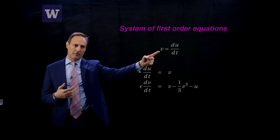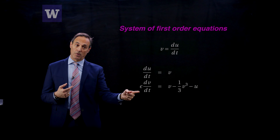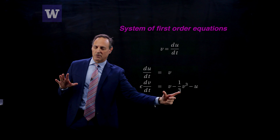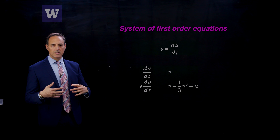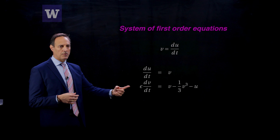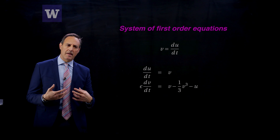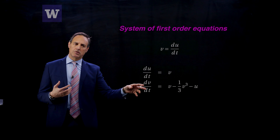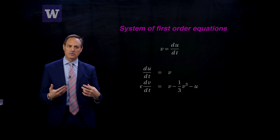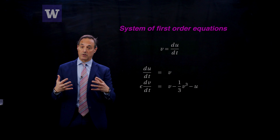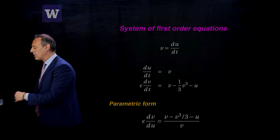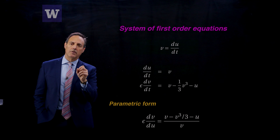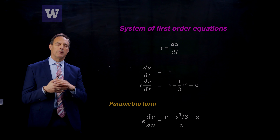The system is: du/dt = v by definition, and epsilon dv/dt = v − (1/3)v³ − u, where the nonlinear damping terms appear on the right-hand side. Written in phase plane variables, you can see exactly where epsilon sits. Having epsilon in front of the time derivative means v is potentially changing slowly in time, so this oscillator has both a slow time variable and a fast time variable — it's a multiple scale problem requiring multiple scale expansions to resolve the inner layer where dynamics change rapidly.